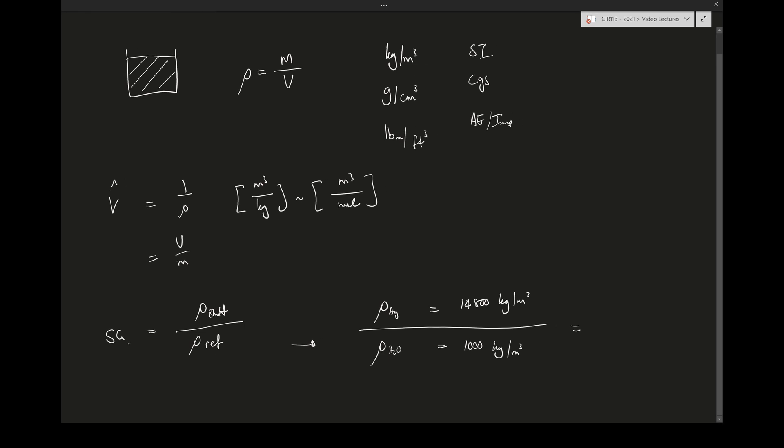We would say that the SG for mercury is 14.8, and you'll see this is dimensionless because, same with molecular mass, we have mass over volume divided by mass over volume. Strictly speaking, it is mass mercury over mass water and volume mercury over volume water.